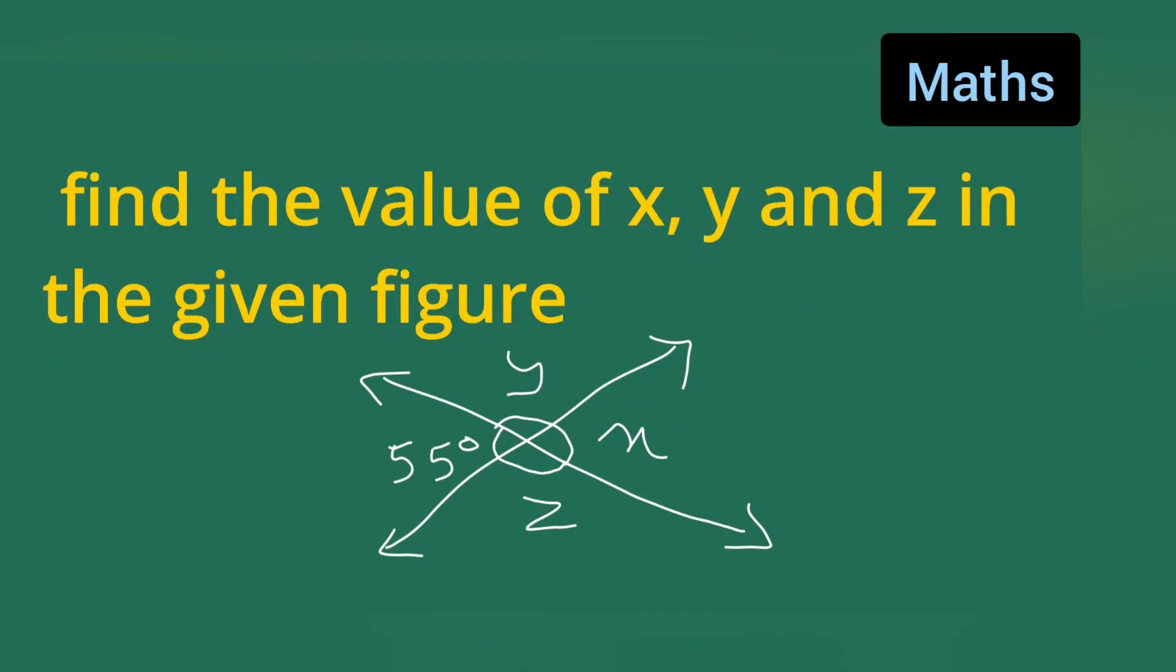In today's class of mathematics, the question is find the value of x, y and z in the given figure. x, y, z we need to find out. 55 is given already, one of the sides is given, right?